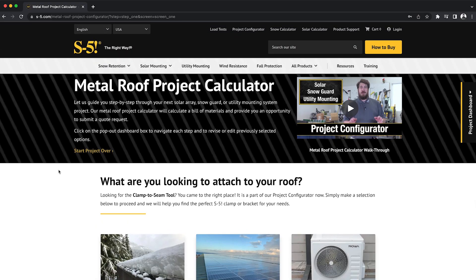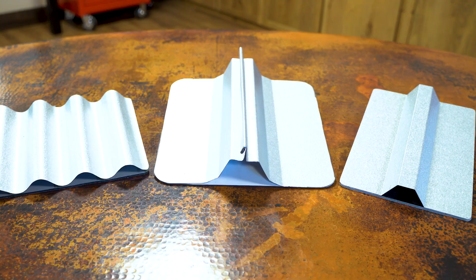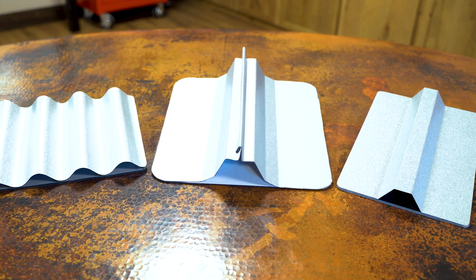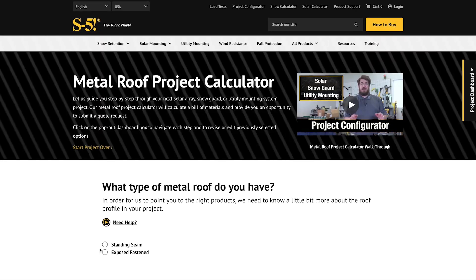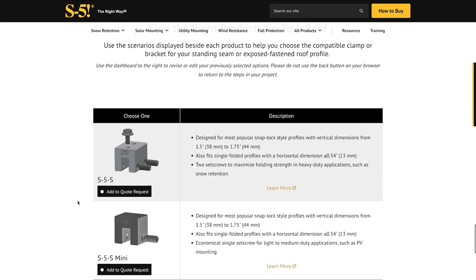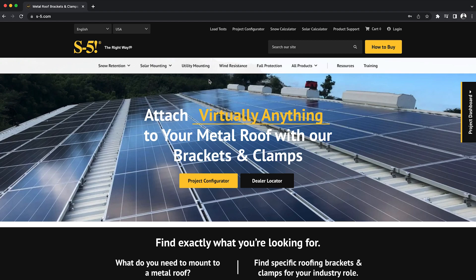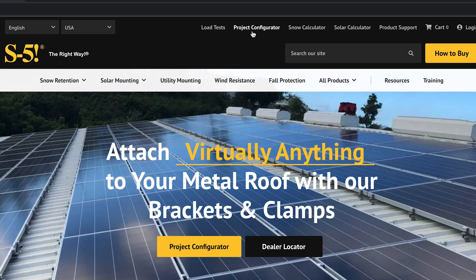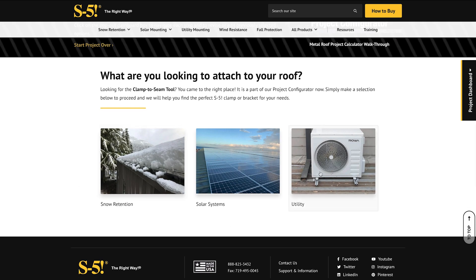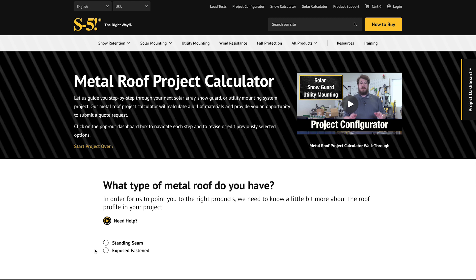The first way to do this is by utilizing our Project Configurator, which works with both standing seam and exposed fasten profiles. The Project Configurator is a step-by-step tool that will guide you through the process. You can find this tool in the header of our website. Start off by choosing the roofing application of your choice and then select your roof type.